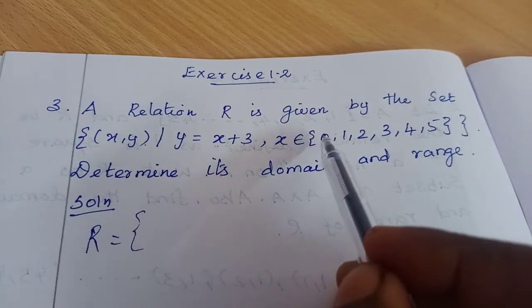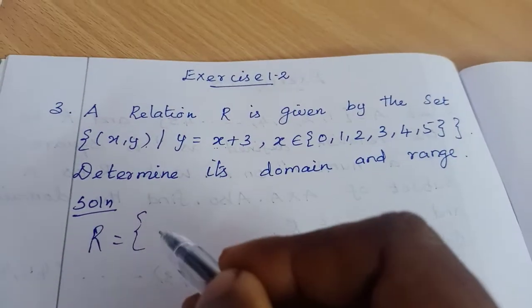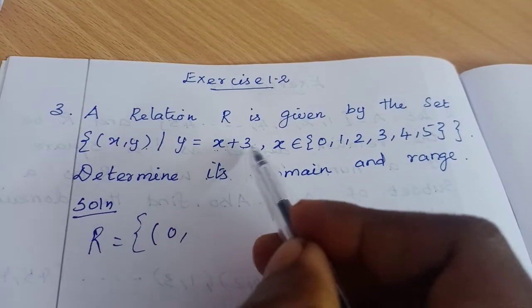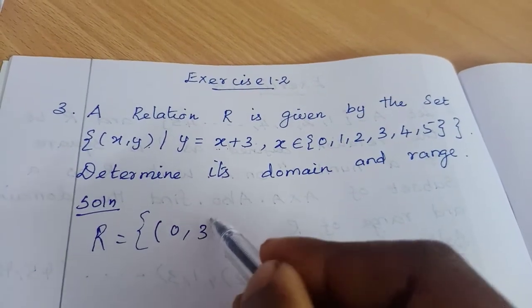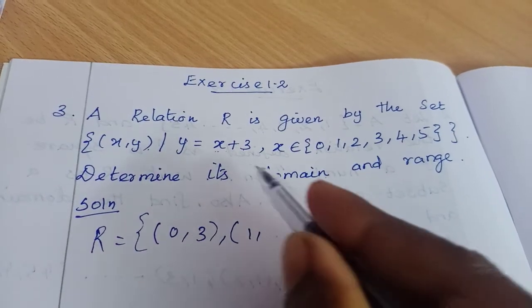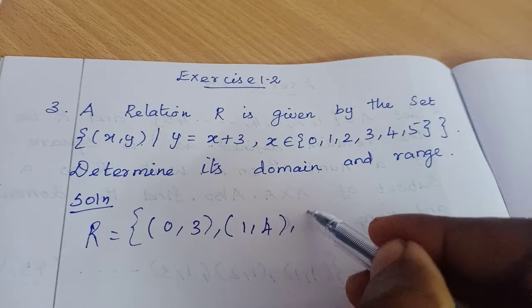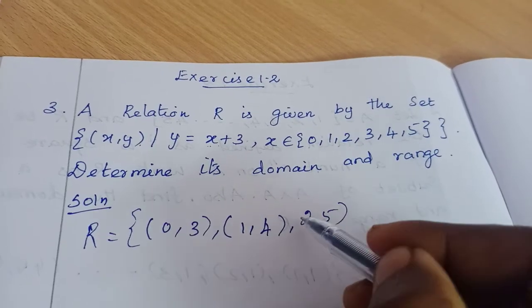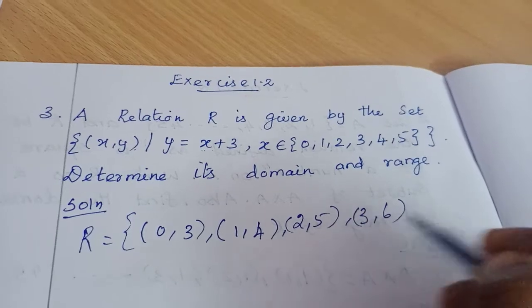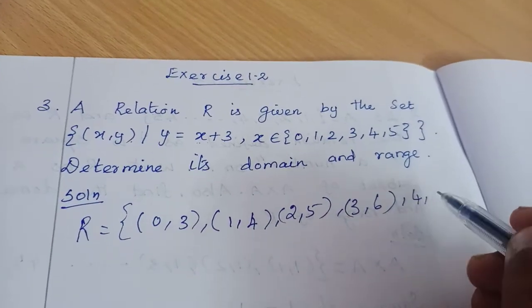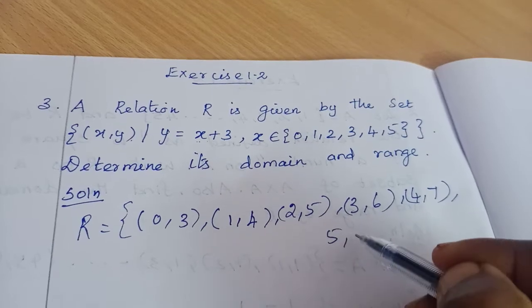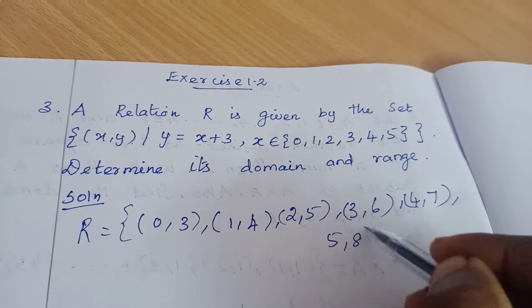First ordered pair: x is 0, y equals 0 plus 3, which is 3, so (0,3). Next, x is 1, 1 plus 3 equals 4, so (1,4). Then 2, 2 plus 3 is 5, giving (2,5). Then (3,6), (4,7), and (5,8).